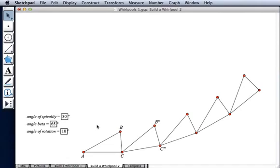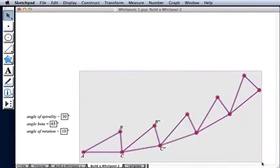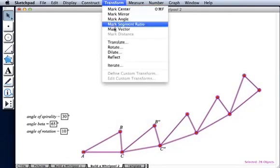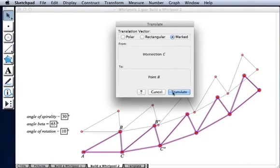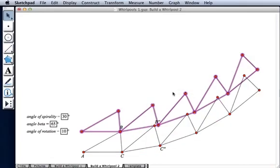Now to make the next row, we're going to start by taking these triangles and translating them up so they sit on top of the existing row. We're going to translate the triangles by vector C, B. So I'll mark that vector and then I'll select my triangles and choose transform translate to create the translated triangles.